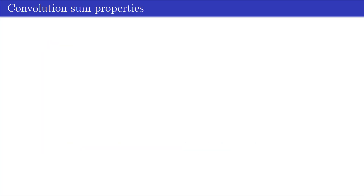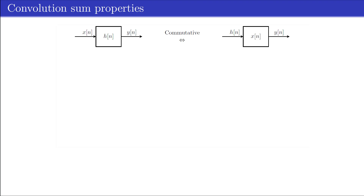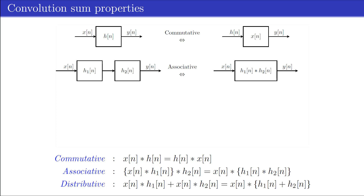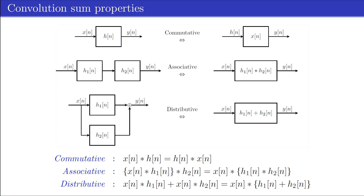Some properties of the convolution sum may be used to simplify its evaluation. The first is the commutative property, which implies that the convolution sum of xn with hn is the same as the other way around. The second is the associative property, which implies that two systems with impulse responses h1n and h2n connected in cascade can be replaced by an equivalent system with impulse response equal to the convolution sum of h1n and h2n. The third is the distributive property, which implies that two systems connected in parallel can be replaced by an equivalent system with impulse response equal to the sum of h1n and h2n.